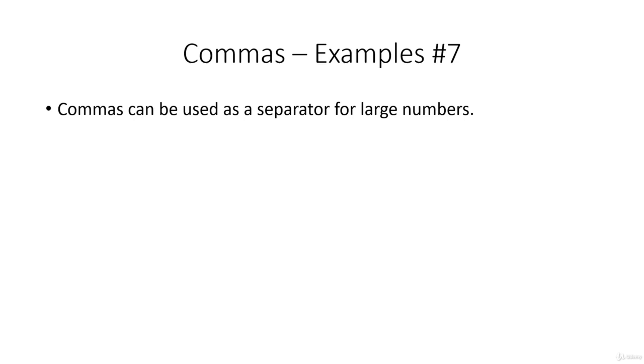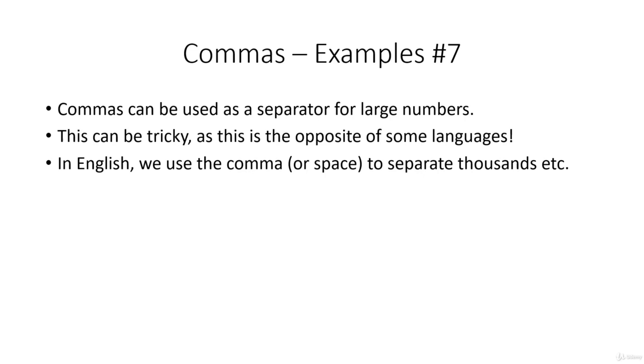And commas can be used as a separator for large numbers. This can be tricky, as in some languages, a comma is used as a decimal point, and the decimal point is used as a thousand separator. So please be careful if you are a native speaker of one of those languages. Now in English, we use the comma or a space to separate the thousands. So as in, one thousand, two hundred and thirty-four. Or six million, three hundred and seventy-eight thousand, one hundred and thirty-four.